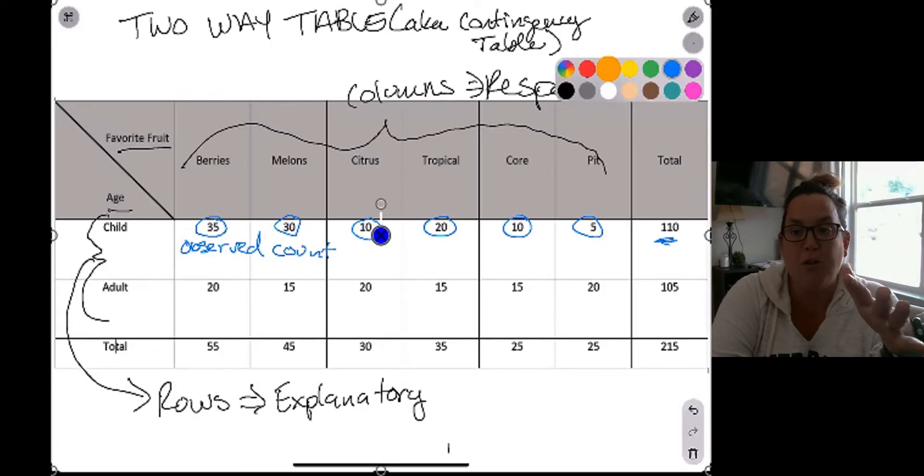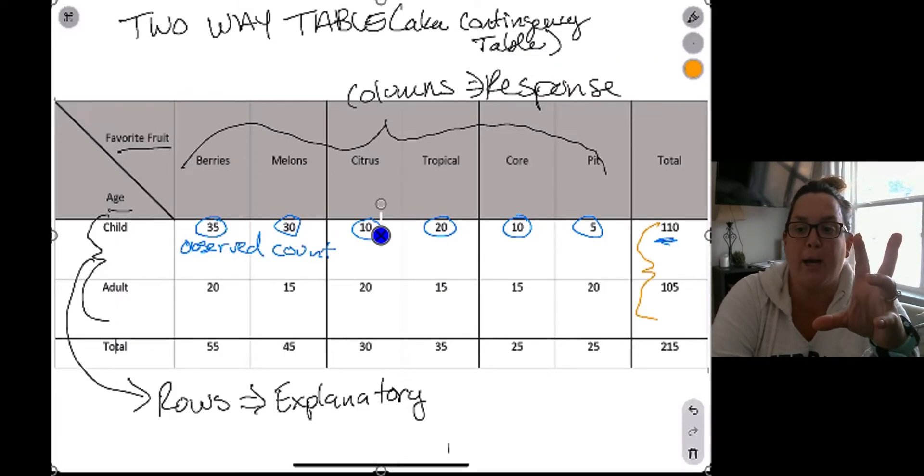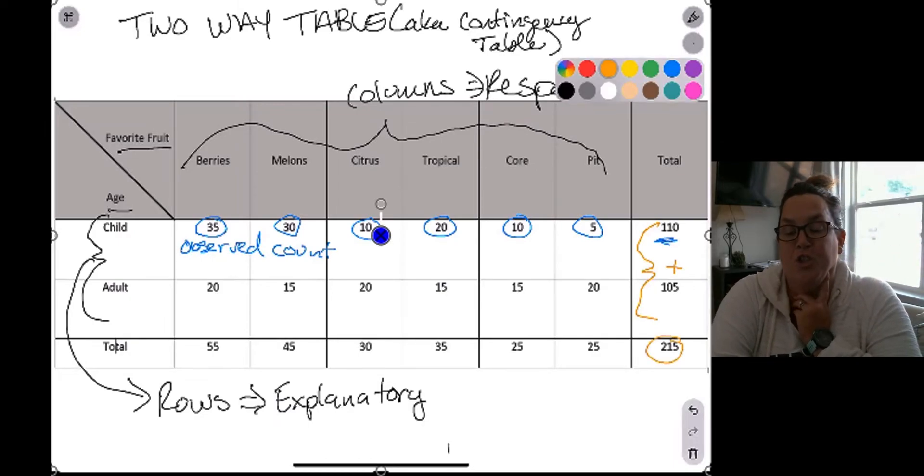Now if you continue, you also will notice that when you add up 110 and 105, it gives you the grand total, which is 215.